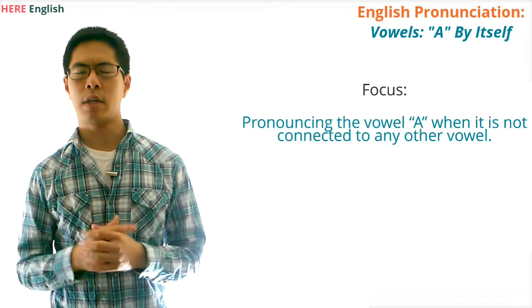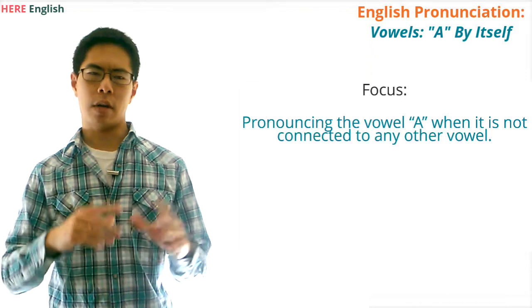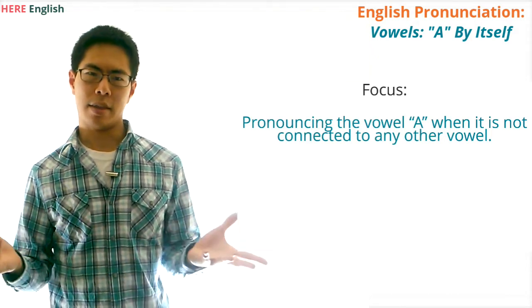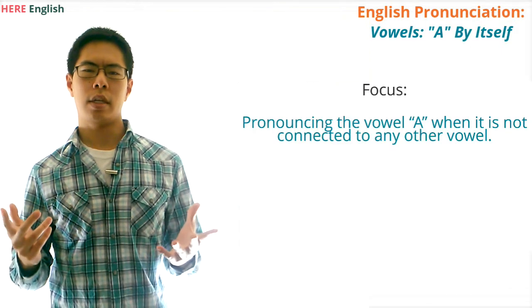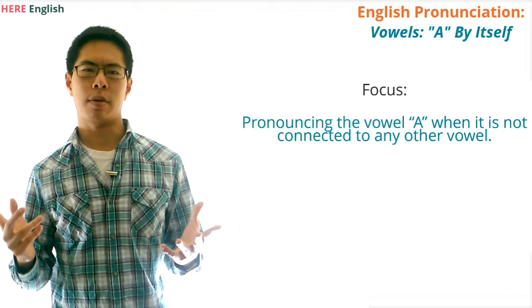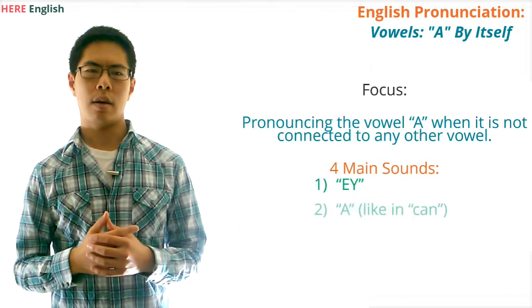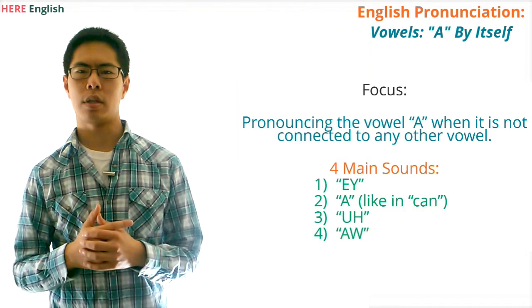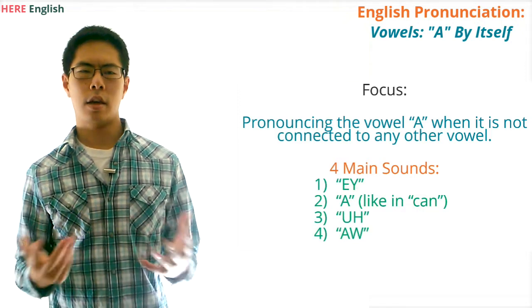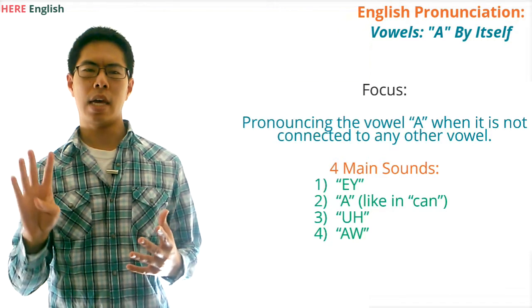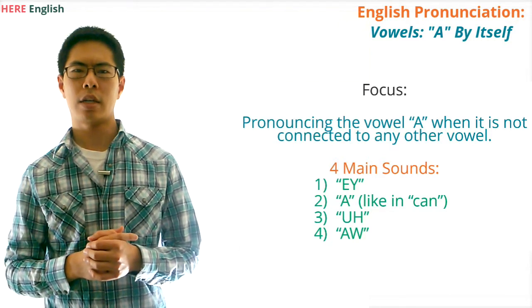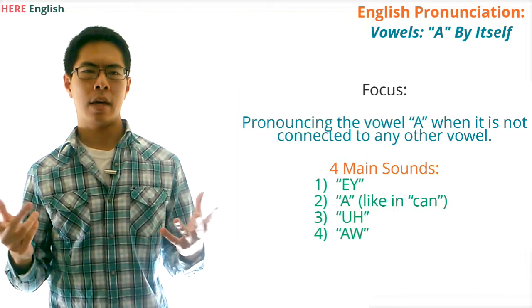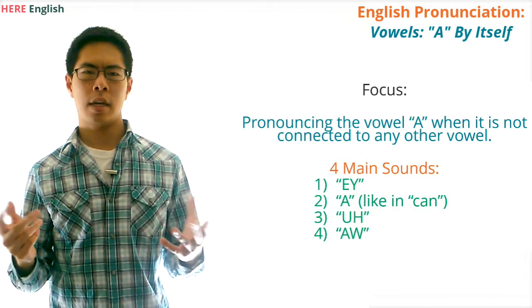Although, for the English language, it seems that for every rule we have, there is an exception. Sorry about that. All we can do here is do our best and provide some examples. So now, let's start going through the different sounds that the vowel A can make in different words. There are four main sounds that the vowel A might have in words when it's not joined to any other vowels: A, A, U, and AW.